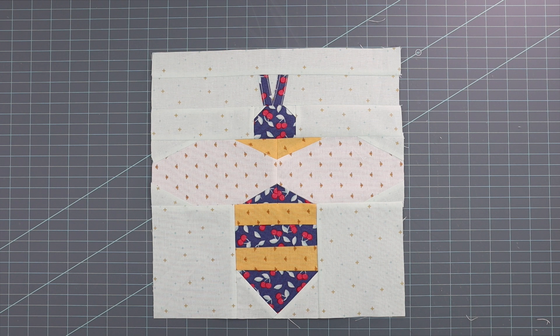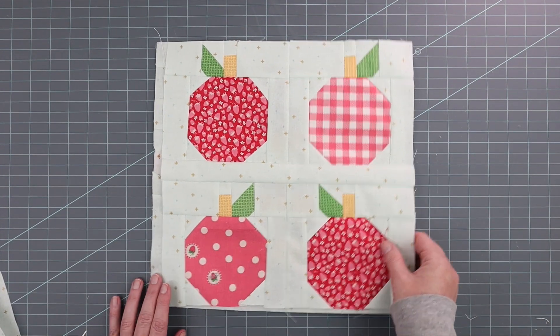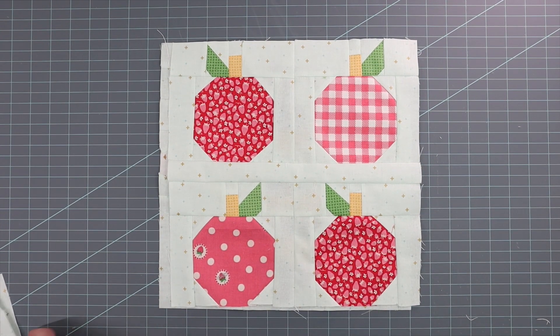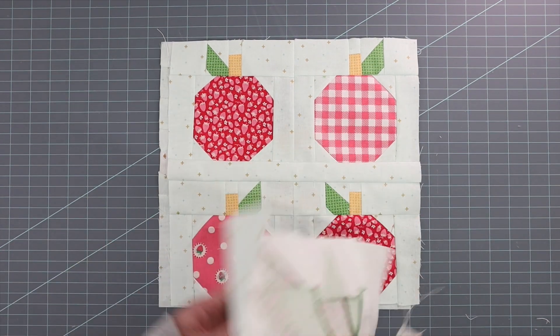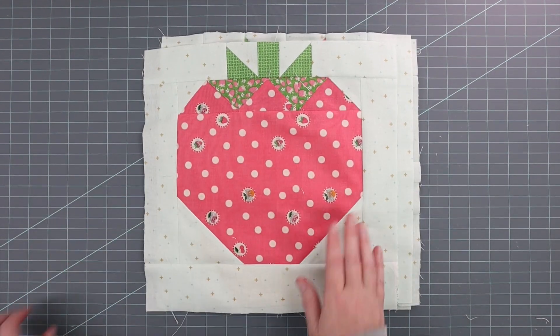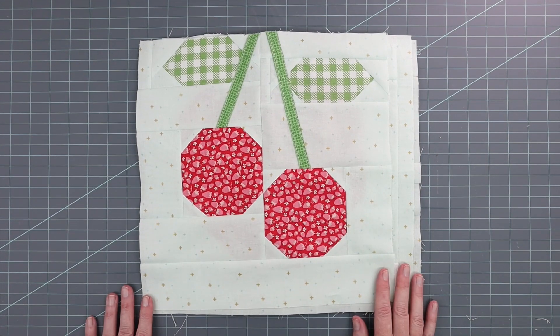So thus far in the quilt along we have created, let me get these in order, an apple—that's what I get when I try and talk too fast. We've created apple quilt blocks, and then the next week we created pineapple blocks and strawberry blocks, and last week we covered the cherry quilt blocks.